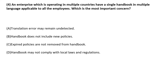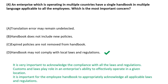An enterprise operating in multiple countries has only a single handbook available in multiple languages. Which of the following is the most concerned? The handbook may not comply with local laws and regulations. It is very important to acknowledge compliance with all laws and regulations at the local level.